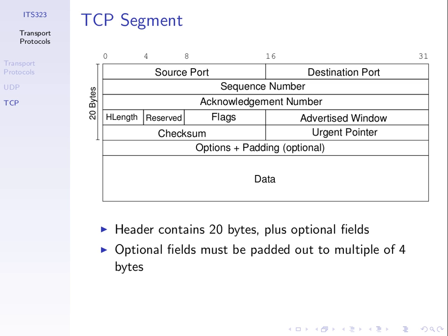Important things in the header: there's a source and destination port which identify the applications which are communicating. We have two numbers — a sequence number which is used to identify the data that we're sending, to give our data some sequence, the first piece of data, the second piece of data. And an acknowledgement number to indicate what the receiver has successfully received and is acknowledging.